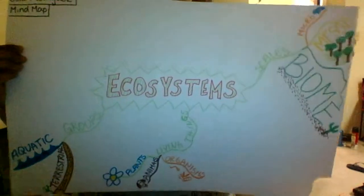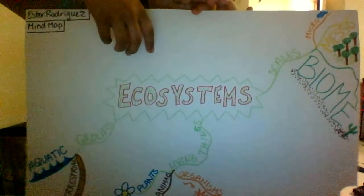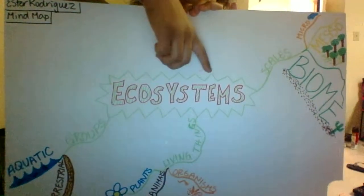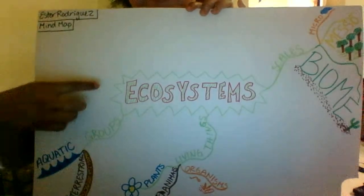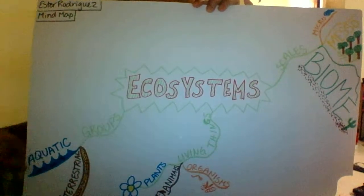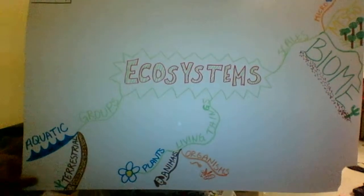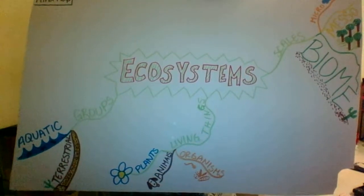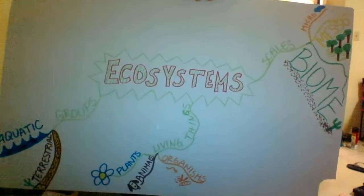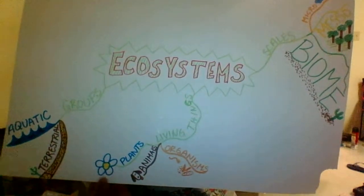I decided to do a mind map for our theme systems — our topic is ecosystems. You can see here that ecosystems are grouped into aquatic (I drew some waves here to represent water) and terrestrial (I drew a little desert here). It also consists of living things, which are plants — there's a little flower —